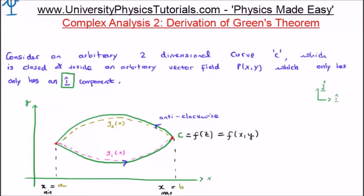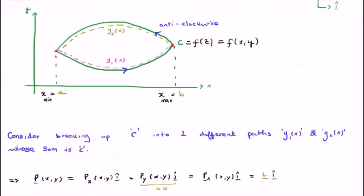Where we see the curve is a function of Z which is a function of both X and Y. So like I said we consider breaking the curve C or the closed curve C into two different paths. Y1 of X and Y2 of X whose sum is going to be equal to C.